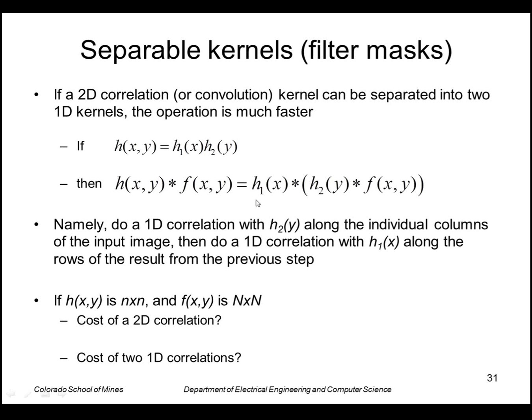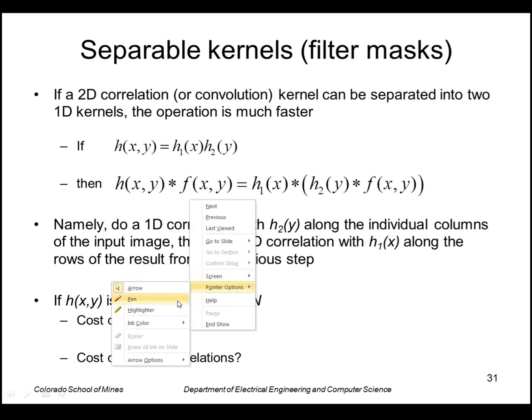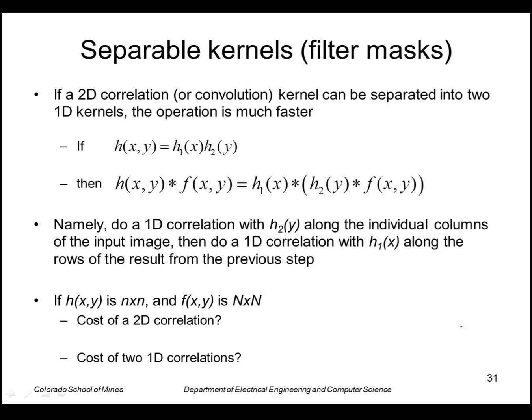So why is this better? If we just look at the cost of this for a filter and an image, recall that we have an image which is n by n and a little filter here, let's say little n by little n. So for a 2D convolution or correlation we have n squared operations at every pixel and there are capital N squared pixels. So that's the order of that operation for the entire image.